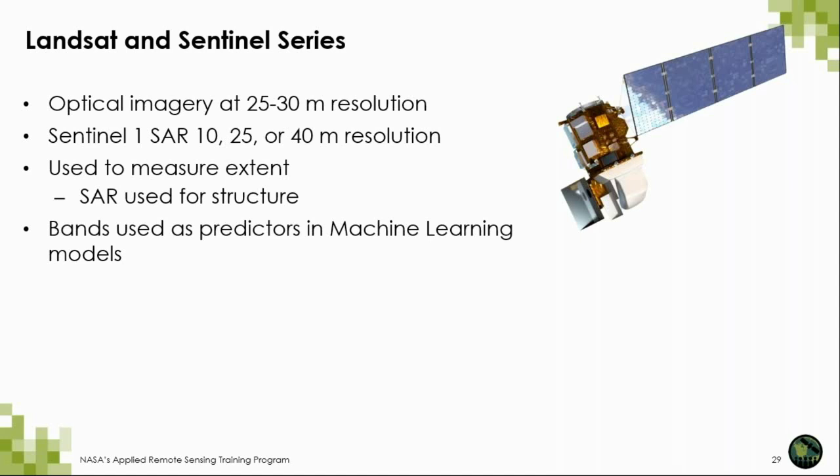Optical imagery can be used to measure extent, and SAR can also be used for adding details about the structure of the area being studied. We often use the bands these satellites collect as predictors in machine learning models. This will be covered in the second part of this workshop, where we talk about random forest models and how we use them to actually map mangroves.